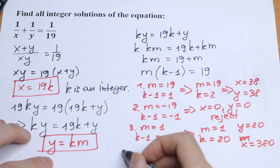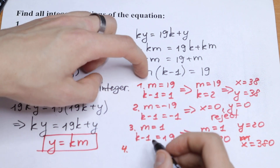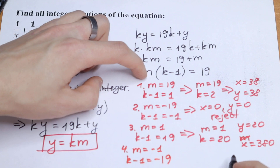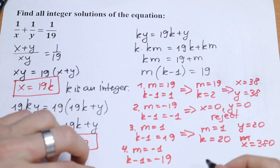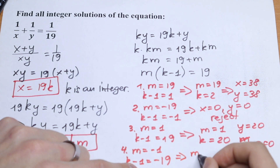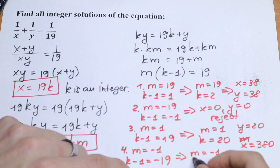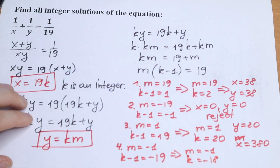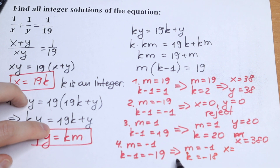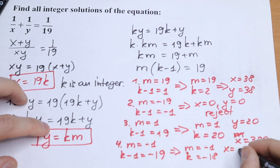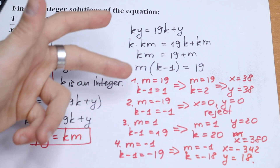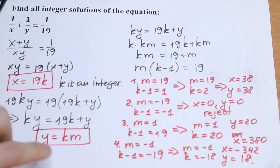The last case: m equal to minus 1 and k minus 1 equal to minus 19, giving k equal to minus 18. So we get x equal to 19 times minus 18 equal to minus 342, and y equal to km equal to minus 18 times minus 1 equal to 18. This gives us two more roots. So we will have five possible solutions for x and y.